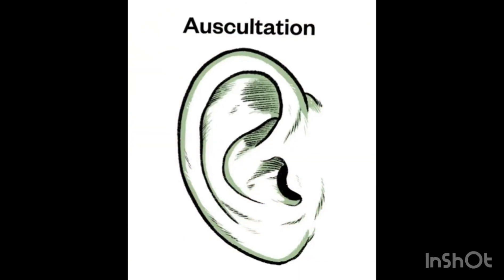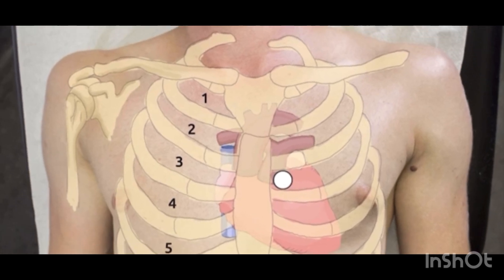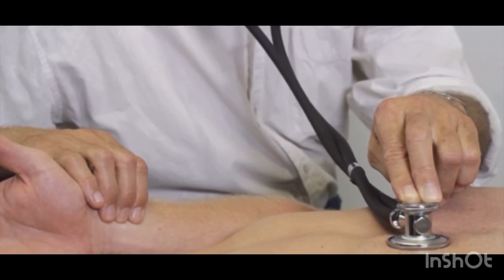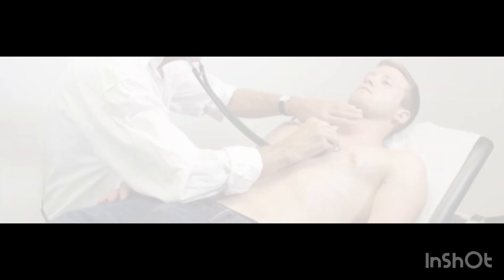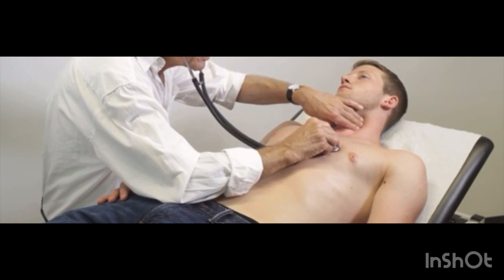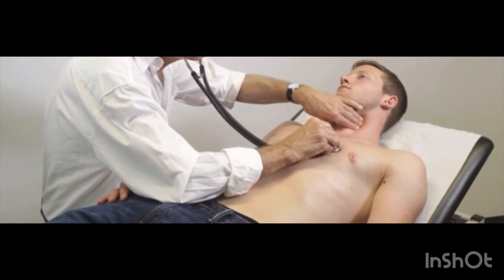Auscultation. Erb's point, located in the 3rd intercostal space at the left sternal border, can be used to check heart rate and compare it with the radial pulse to determine any pulse deficits. To check if heart sounds are systolic or diastolic — especially in patients with tachycardia — palpate the carotid pulse, as the first heart sound should be simultaneous with the carotid pulse.